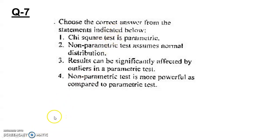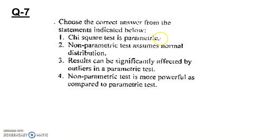Choose the correct option about the Chi-Square test. Chi-Square test is a non-parametric test — not a parametric test. Non-parametric tests do NOT assume normal distribution — normal distribution is assumed in parametric tests. Non-parametric tests are NOT more powerful than parametric tests; parametric tests are more powerful. Option 3 is correct: results can be significantly affected by outliers in a parametric test.